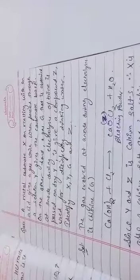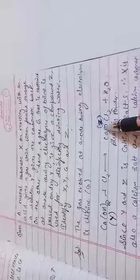When electrolysis of brine is passed on dry Y, it gives a compound Z which is used for disinfecting water. We use bleaching powder. Bleaching powder is prepared when we pass chlorine through calcium hydroxide, so Y is calcium hydroxide. It forms bleaching powder, that is Z, and water is formed.